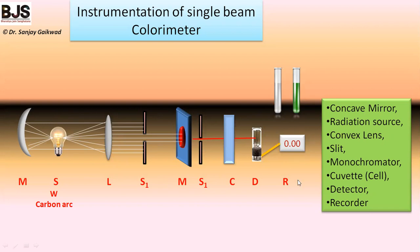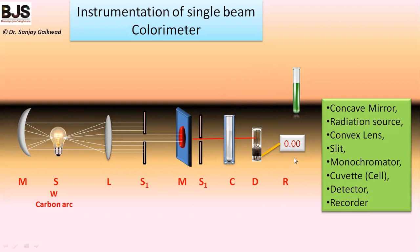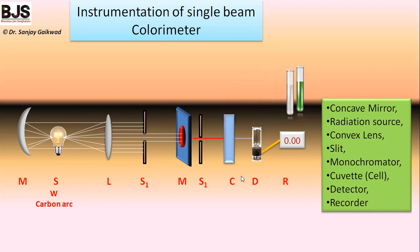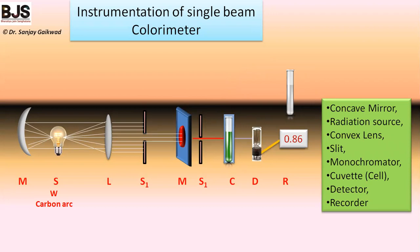In this instrument, first we place the blank solution in the cuvette and allow light to fall on the detector — this gives an absorbance equal to zero. When we replace the blank with a colored solution, light gets absorbed and we measure the absorbance, since the transmitted light decreases. Only the colored pigment is measured in terms of absorbance. This is the function of the colorimeter and it is used for determination of the concentration of an unknown solution.